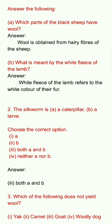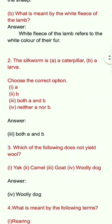Second question: The silkworm is A) a caterpillar, B) a larva. Choose the correct option. First option A, second option B, third option: both A and B, fourth option: neither A nor B. Answer: option three, both A and B.